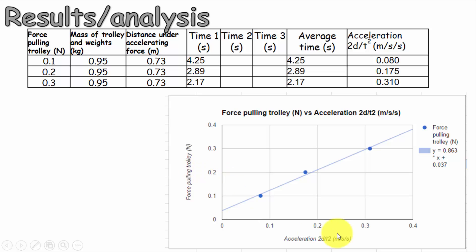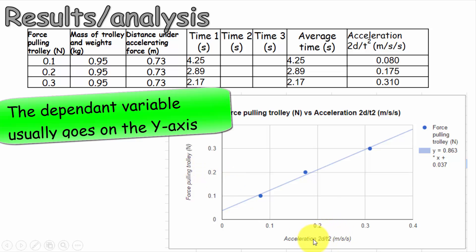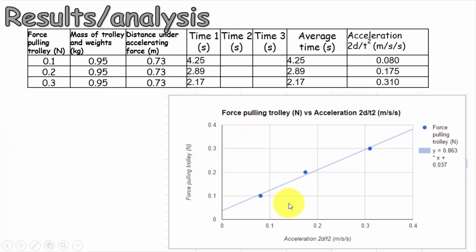I've plotted force against acceleration. Normally you would put the thing you were measuring, which was essentially the acceleration, on the y-axis. But because the hypothesis is saying that force should be proportional to acceleration and that the gradient would be equal to the mass, I've decided to do it this way around. The gradient is supposed to be the mass, and I measured the mass of the trolley and the weights to be about 0.95 kilograms. And this time around, I'm getting the gradient to be 0.863. So relatively close.